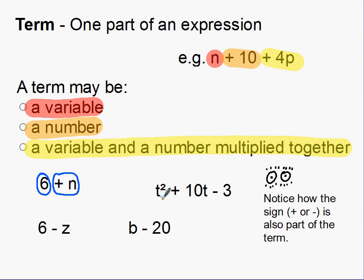In the expression t squared plus 10t take away 3, we've got a term there, a term there and another term there. And in the expression 6t take away z, that's the term and that's the term. And in b take away 20, those two are terms. Notice how the sign, the plus or the takeaway, the plus or the minus is also part of the term.